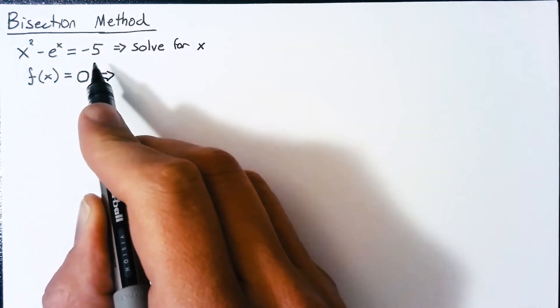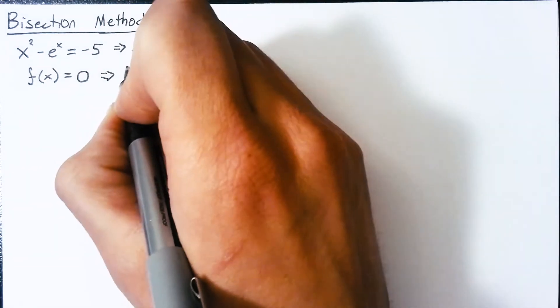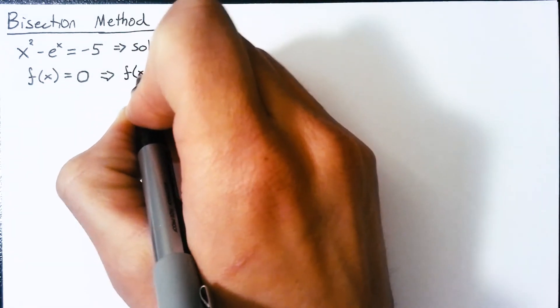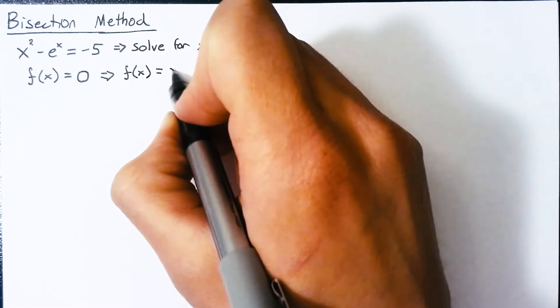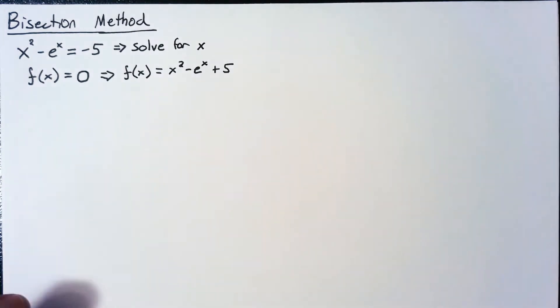All we need to do here is just move this negative 5 to the left-hand side of the equation. And so we can say that our function here is equal to x squared minus e to the x plus 5.